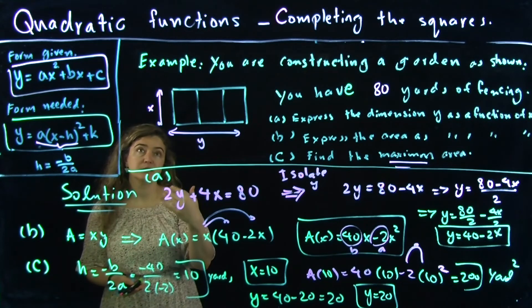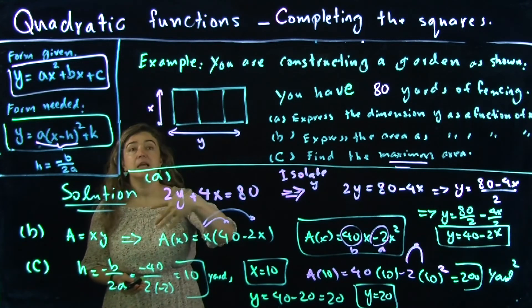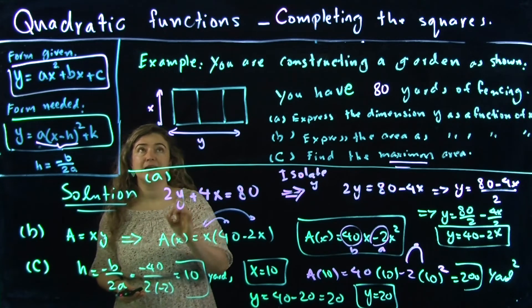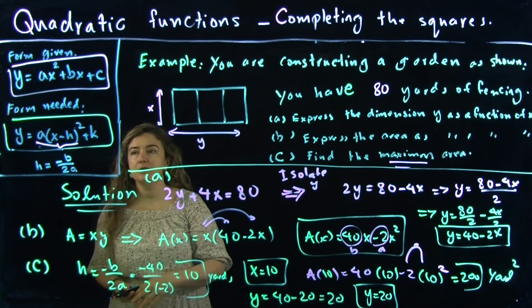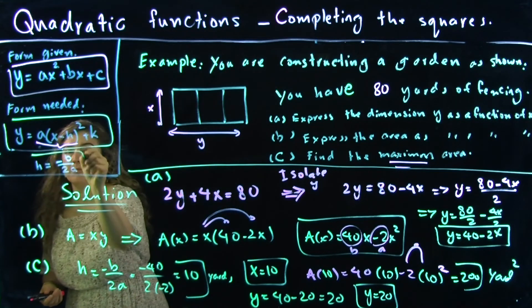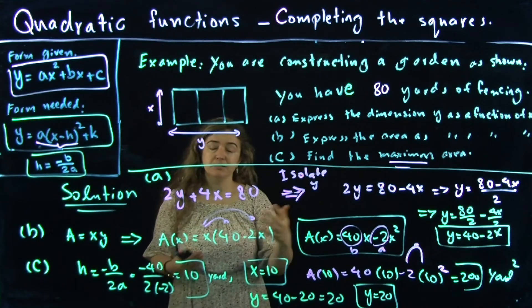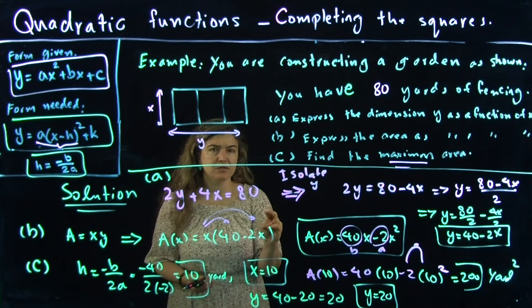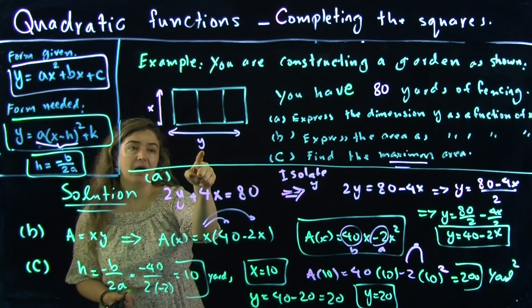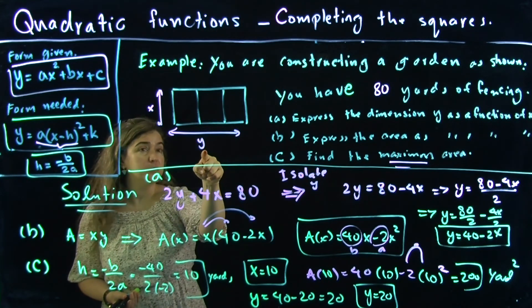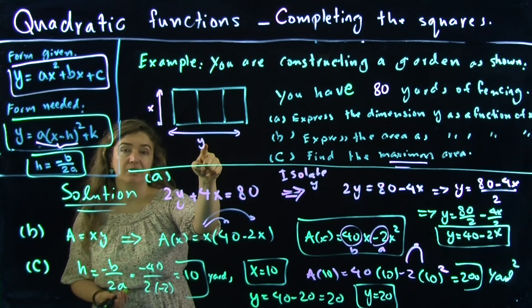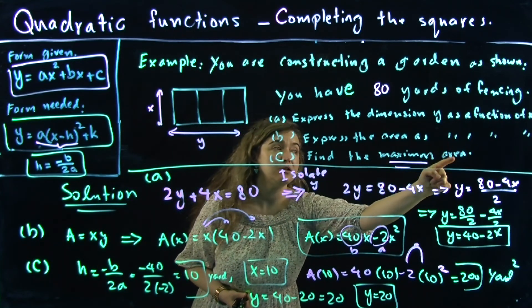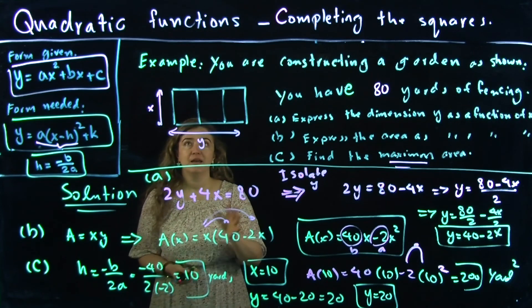Most geometric questions in precalculus involving quadratic functions have the same feeling to them. You have to remember that the vertex gives you the maximum. One thing that can be confusing: since I named the dimension y, some people think y is the function being maximized — but you have to read the problem. The problem is telling you that you're maximizing the area.